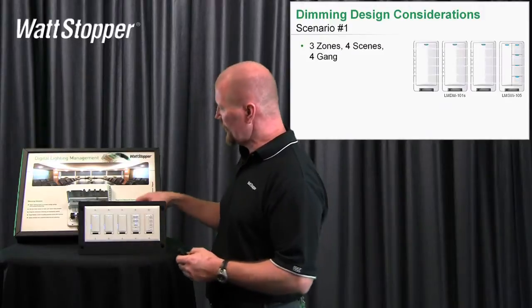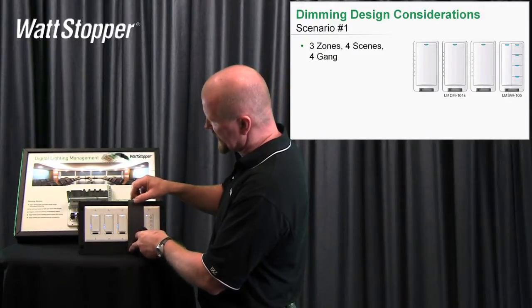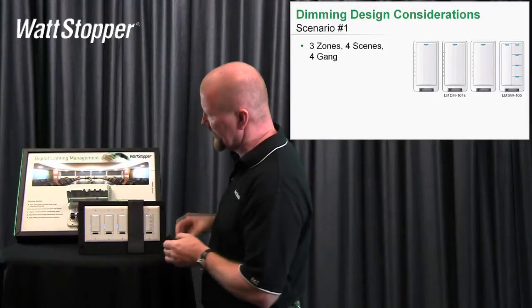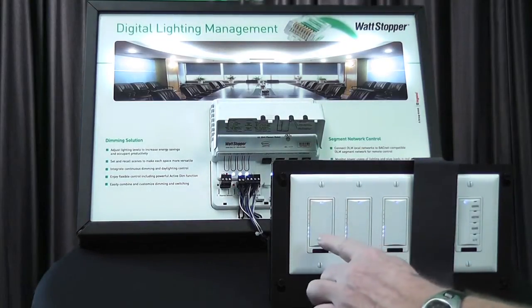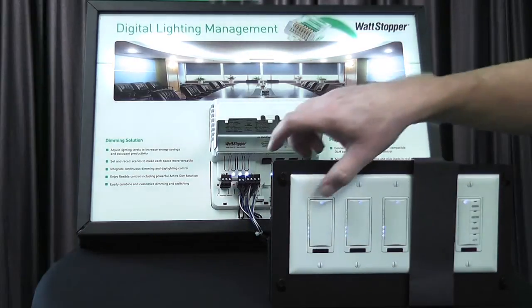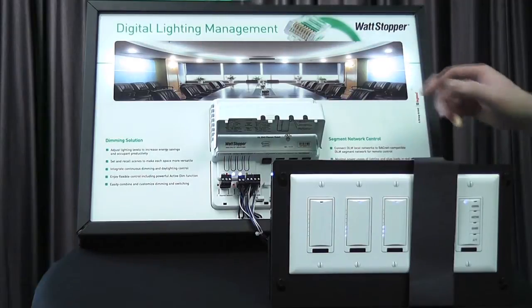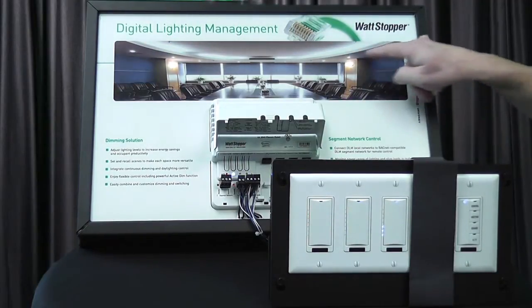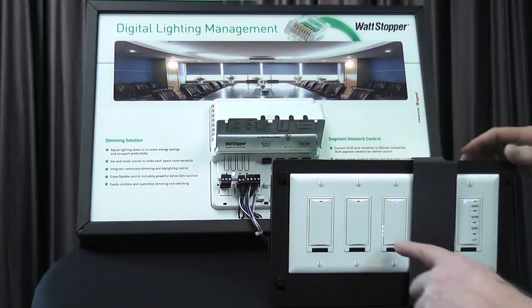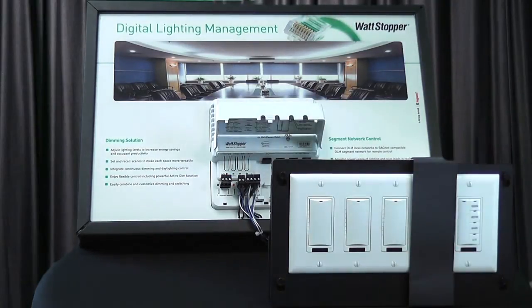The first scenario uses only the three dimmers and the scene switch. We've got three dimmers and a scene switch. I've bound this dimmer to my cove lights — turn it off and the cove lights turn off. This dimmer is bound to my down lights, and this one is bound to the sconces.